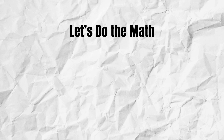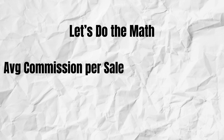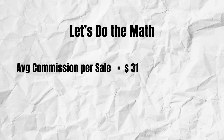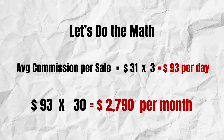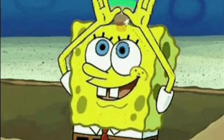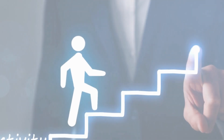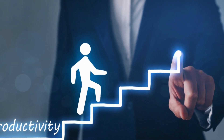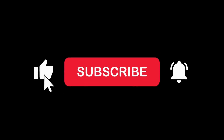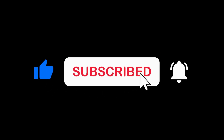Now let's do the math. In the start, the average commission per sale is $31, and if you get no more than three orders a day, that's $93 a day — multiply it by 30 and it's almost $2,800 per month. As I always say, imagination is your limit. You can take this strategy and improve it even further to get even better results. If you like the video, give it a thumbs up and subscribe, my friend.